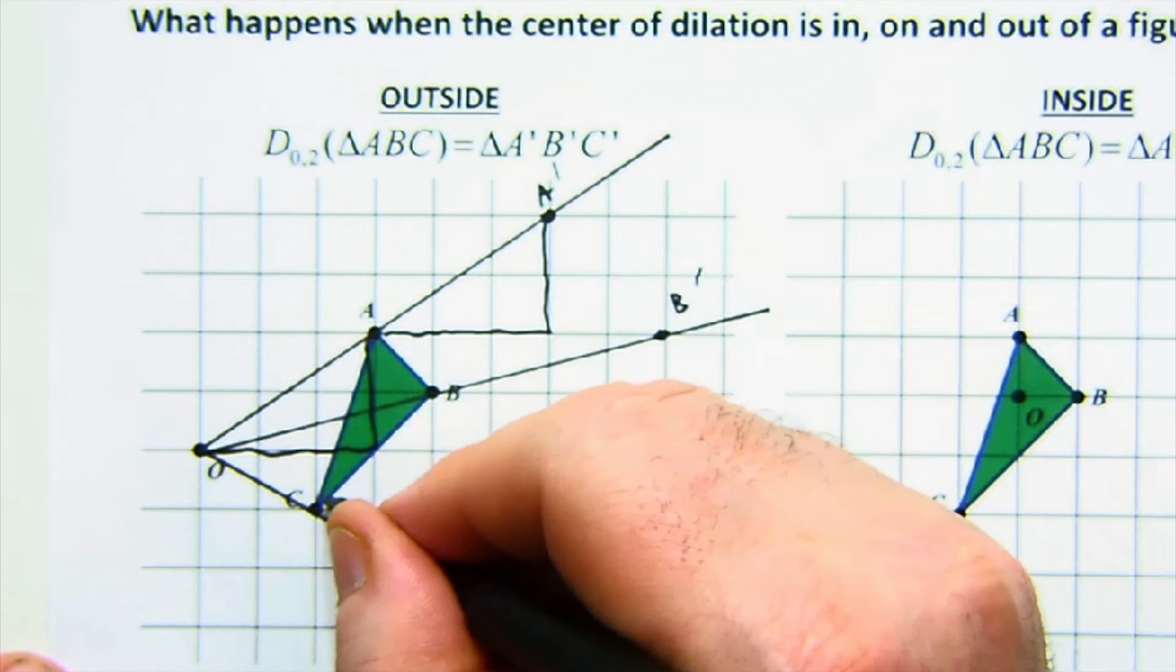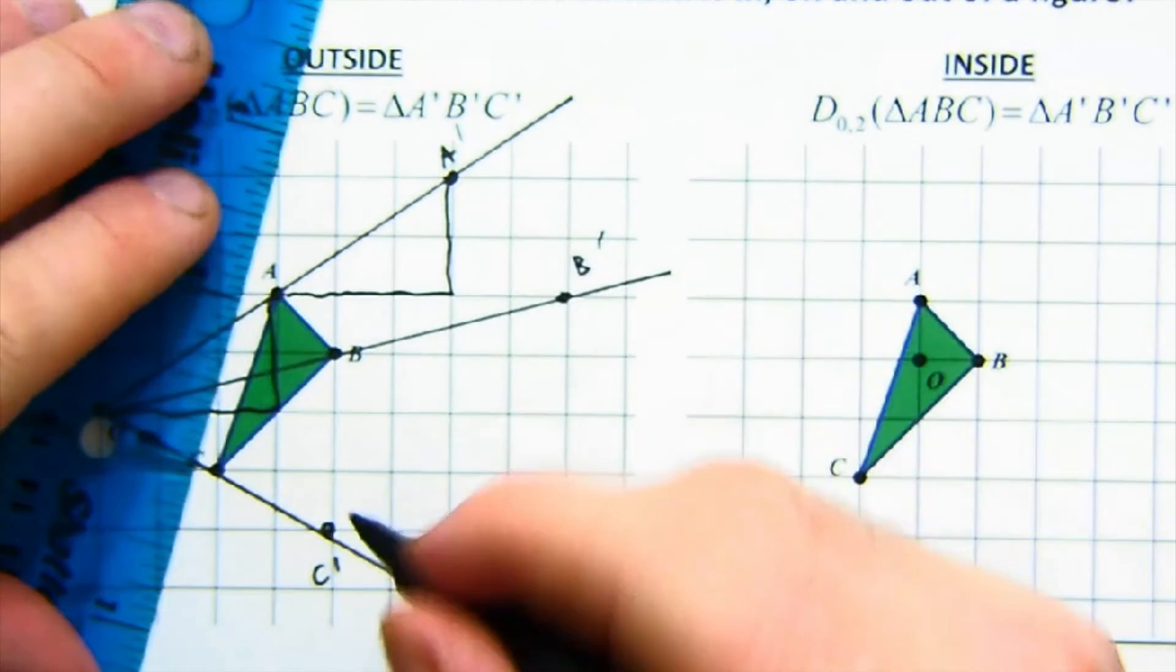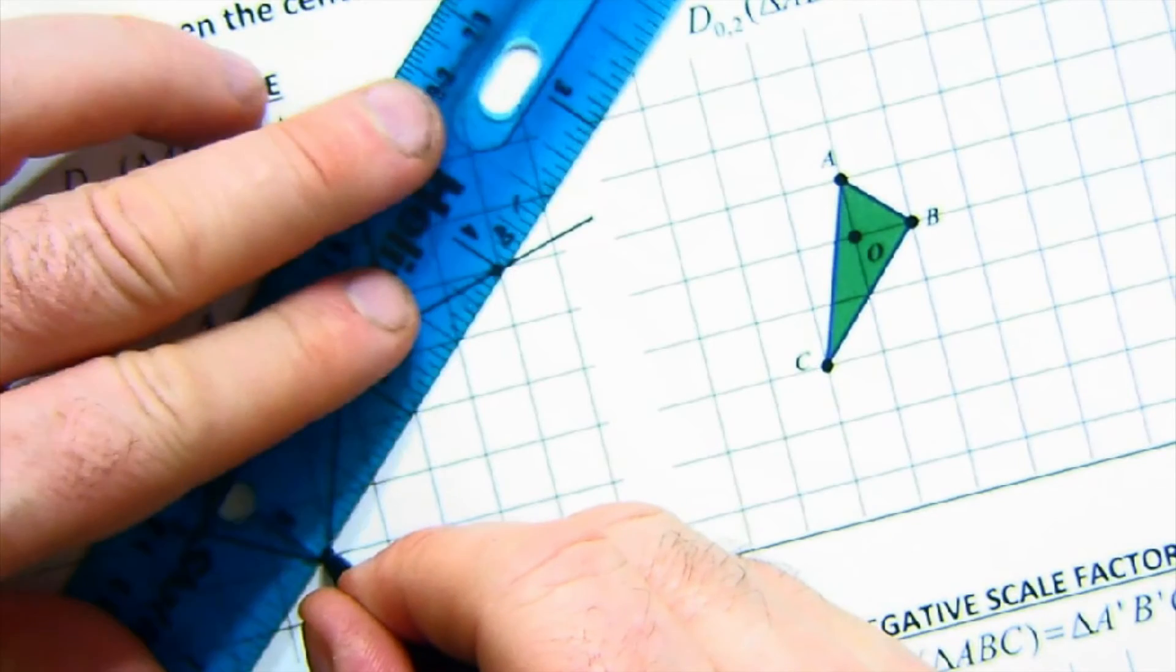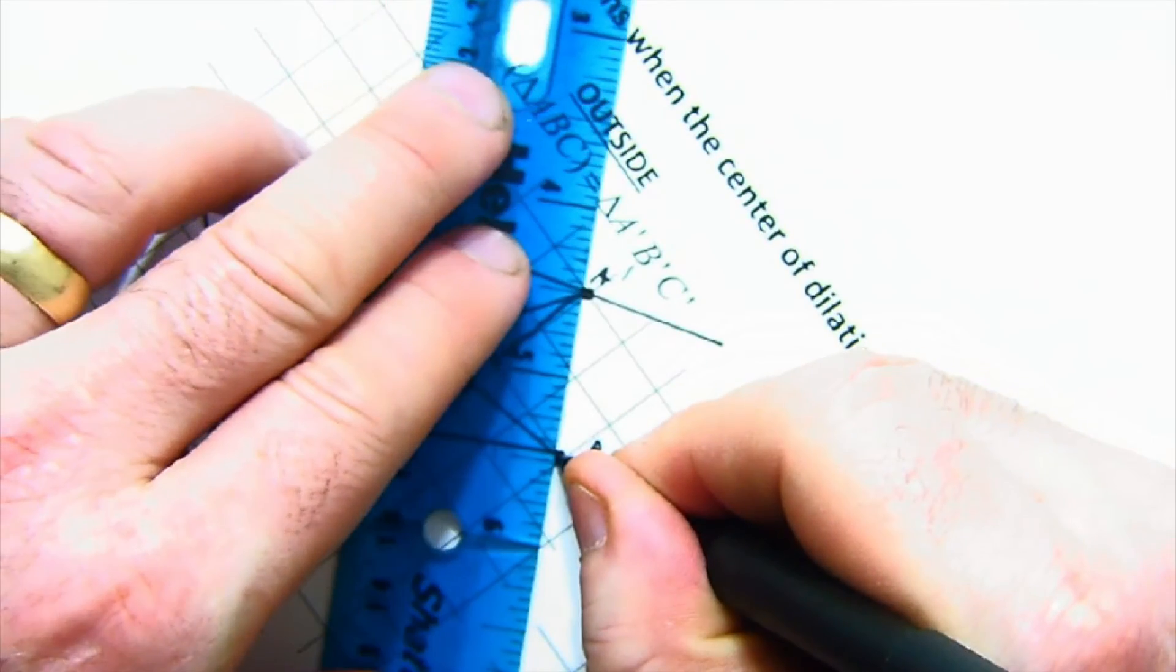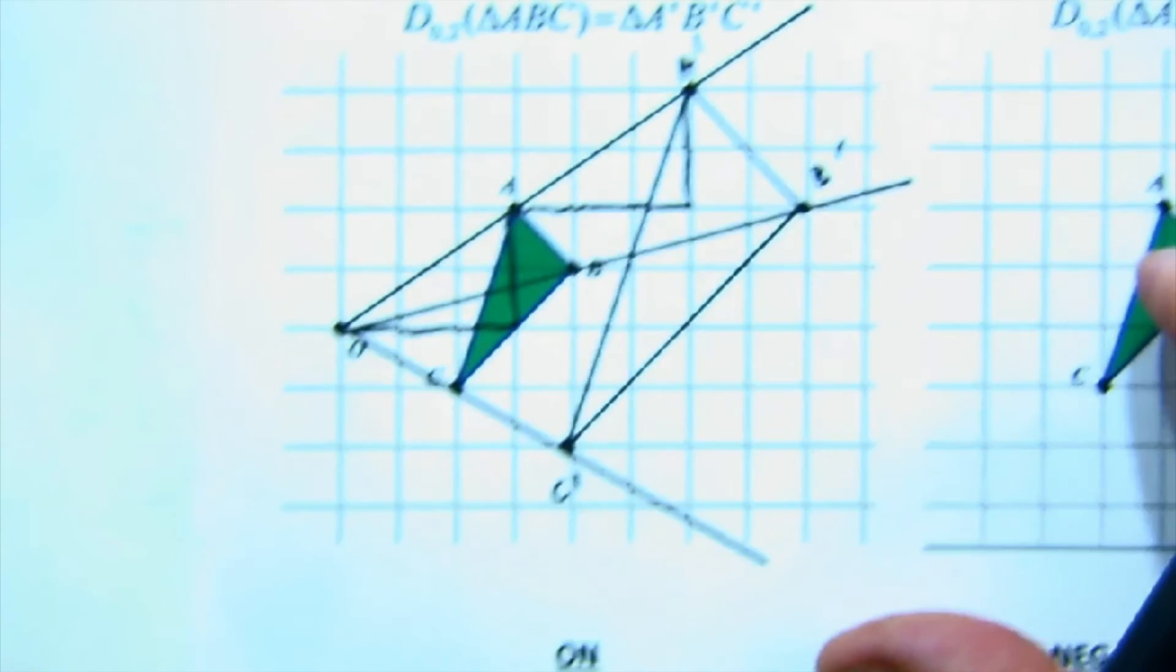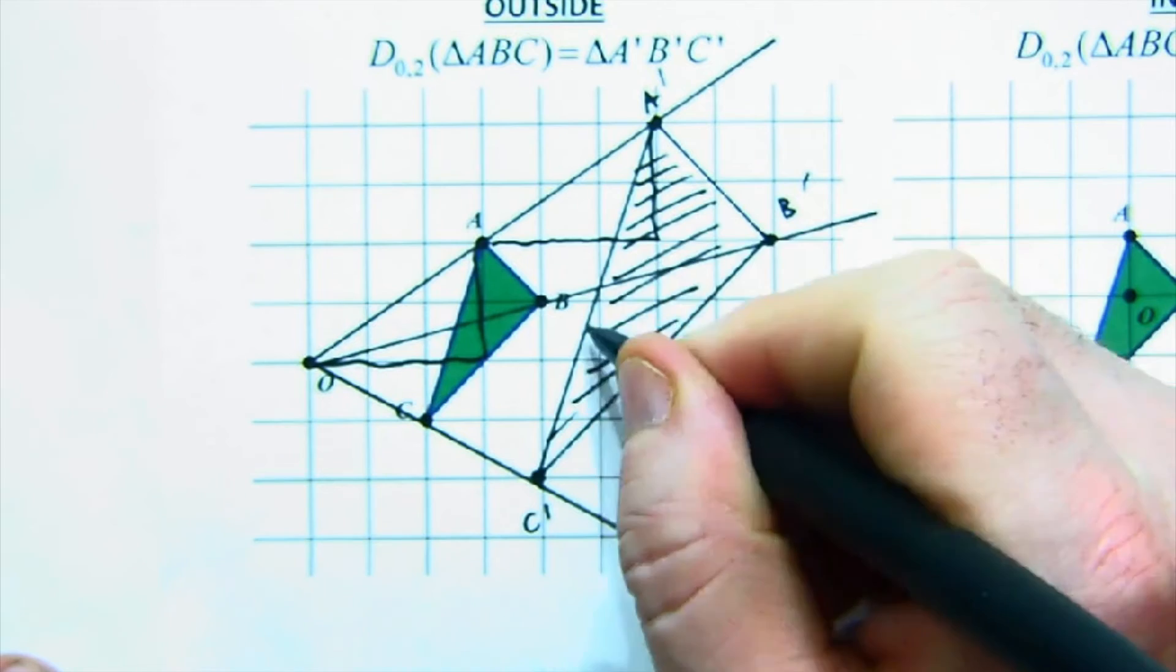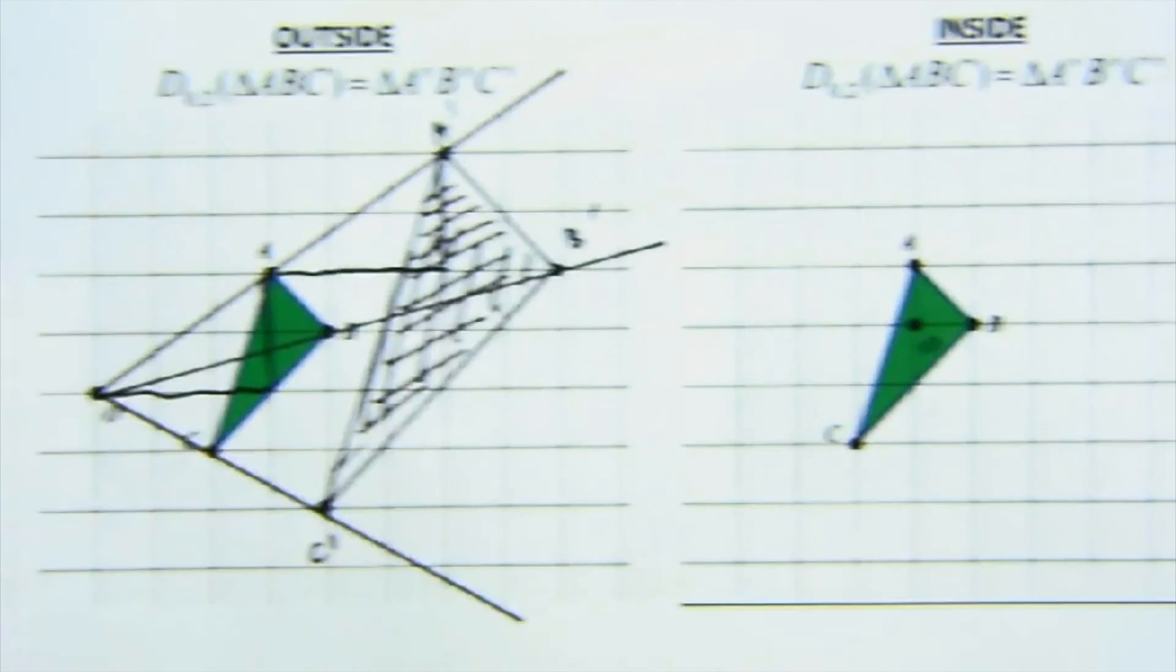Down one, over two. Down one, over two. There's C prime. And if I was to connect those, I love dilations. I love how they look when you're all done. It's just cool that you create these beautiful shapes that are similar in their shape and form, but are proportionally bigger or smaller.